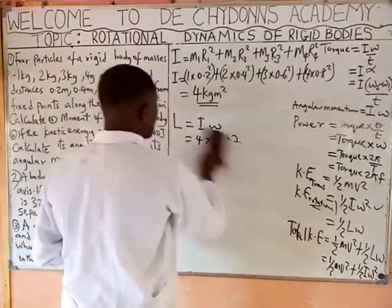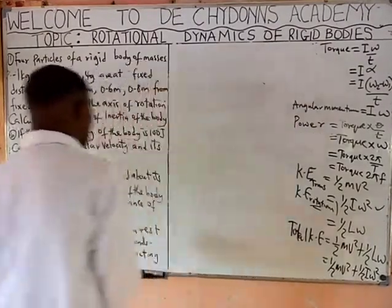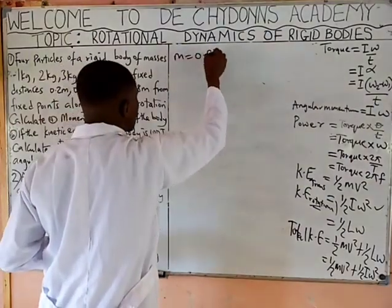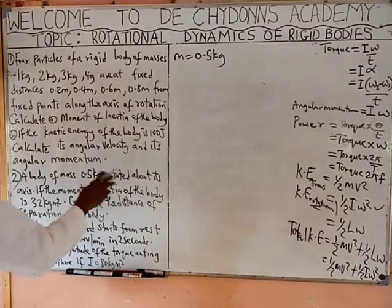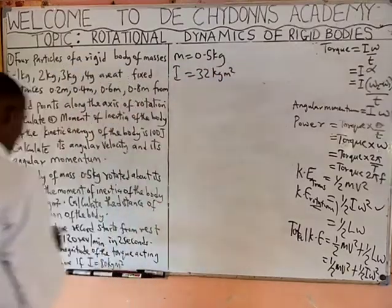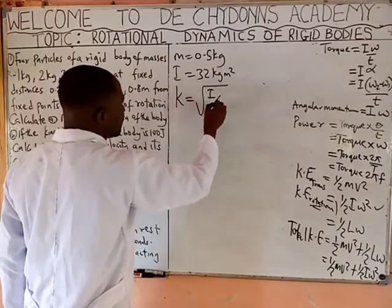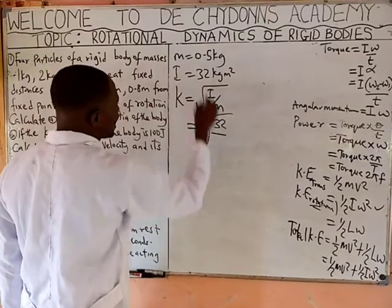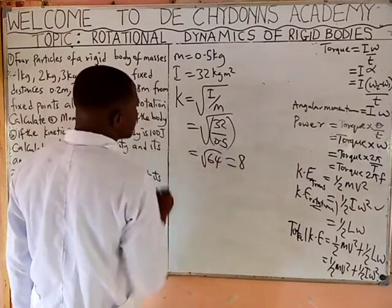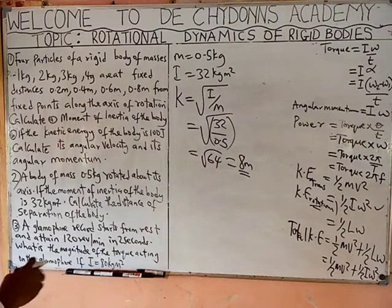Question number two: if a body of mass 0.5 kg is rotated about its axis and the moment of inertia is 32 kg·m², calculate the distance of separation of the body — that is the radius of gyration. R equals square root of I over M, which is square root of 32 over 0.5. That is square root of 64, which equals 8 meters.